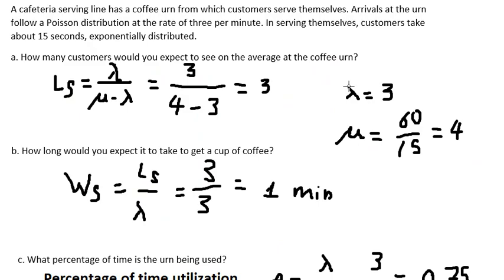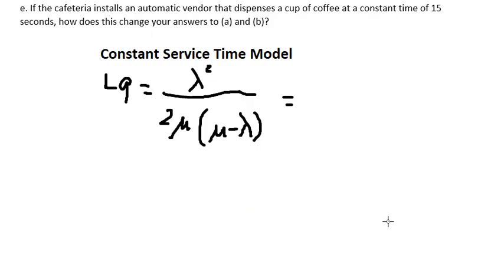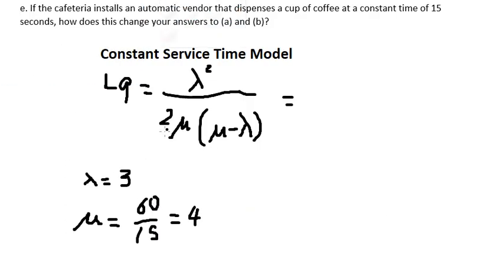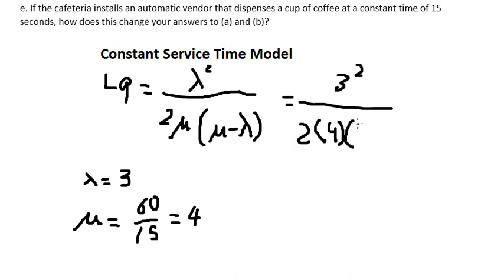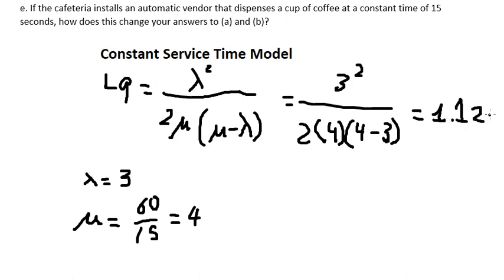We put lambda equals 3 into the formula: 3 squared divided by 2 times 4 times (4 minus 3). After calculating, we get 1.125.